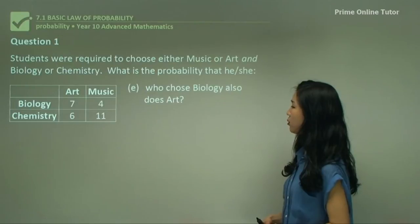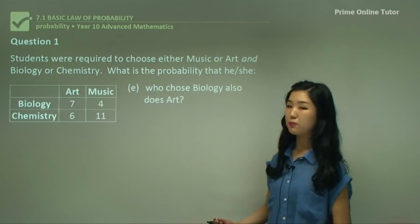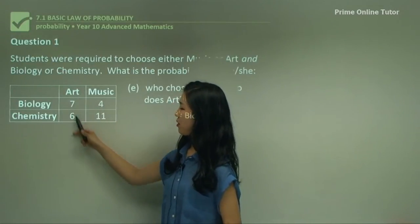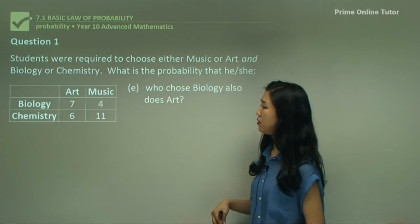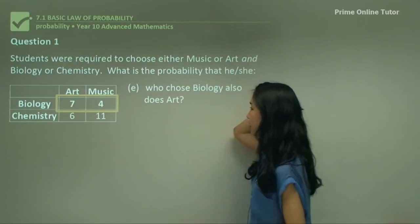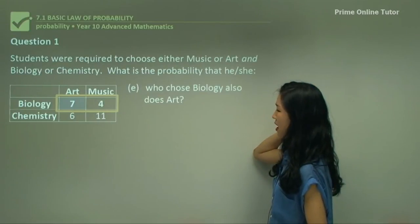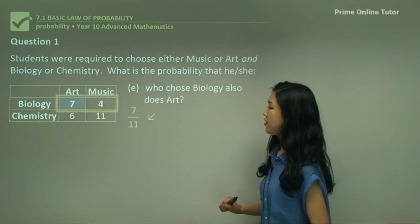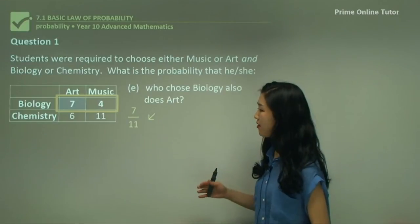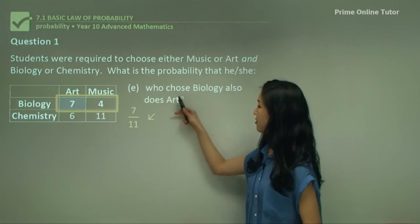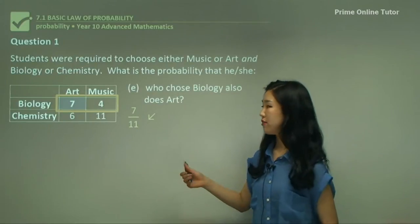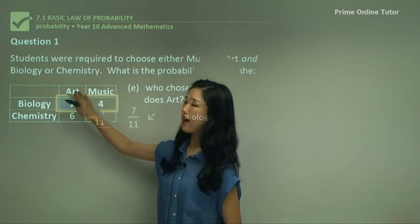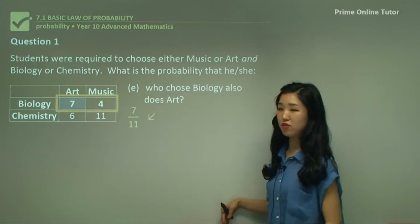E — who chooses biology also does art. So out of the people who choose biology, they should also do art. These are the people who do biology, and these are the people who do art, so the overlapping common people are going to be these ones. Only 7 students. So 7 out of 11 — make sure it's not 28, because it says out of the people who choose biology. So out of the 7 and 4 students, which makes 11 students, only 7 choose art as well. So 7 over 11.